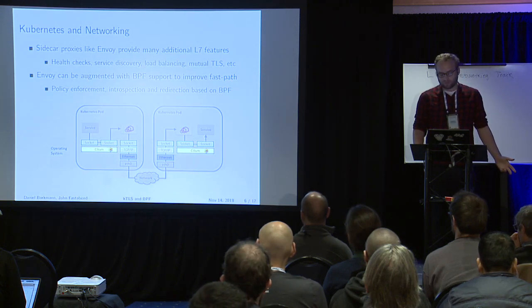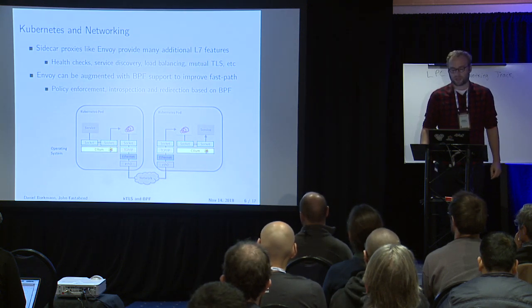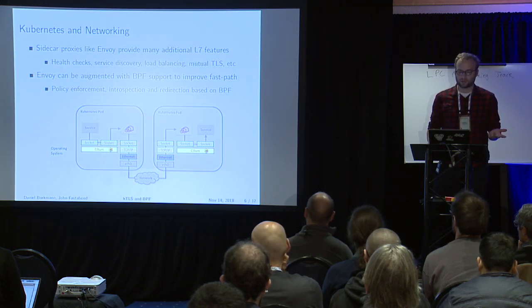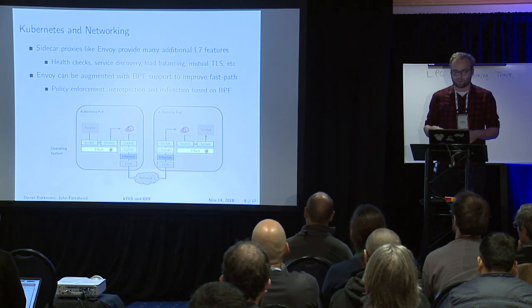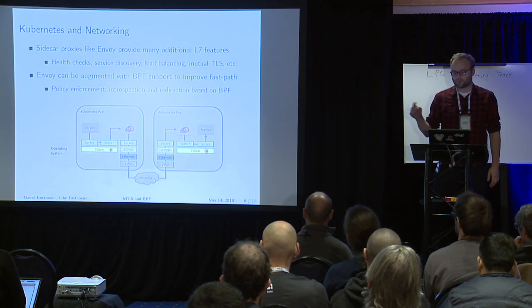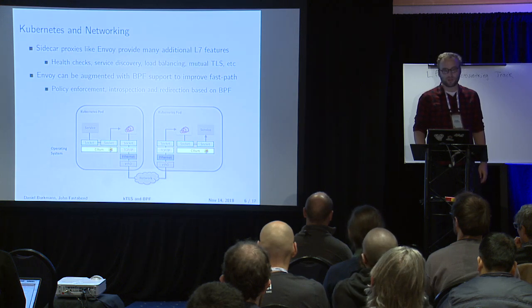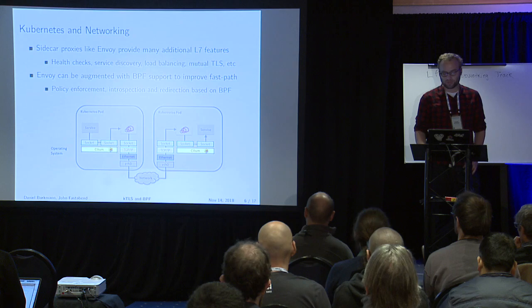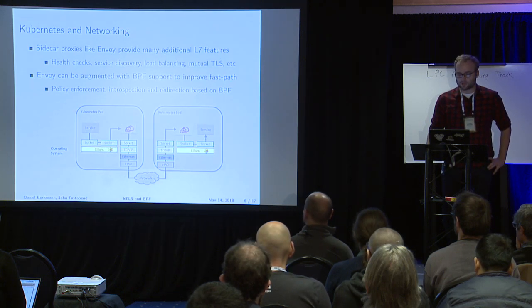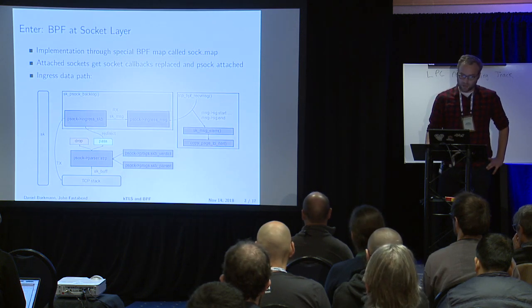Those sidecar proxies such as Envoy also provide additional features: health checks, service discovery, load balancing, or mutual TLS — which is quite nice because you don't have to change your application, you get these features automatically since all traffic goes through the proxy. But we think it makes sense to speed up that fast path and augment it with BPF support in terms of policy enforcement, introspection, and redirection — so you don't have to traverse the networking stack six times, but only actually two times.